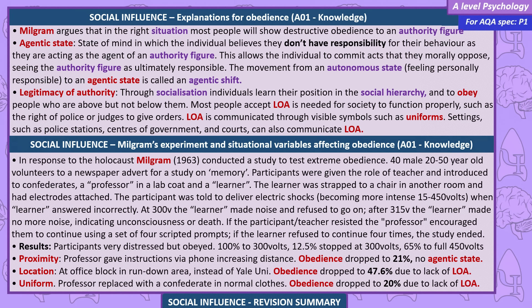In response to the Holocaust, Milgram, 1963, conducted a study to test extreme obedience. 40 male volunteers aged 20–50, recruited via a newspaper advert for a study on memory, were given the role of teacher and introduced to a professor in a lab coat and a confederate learner. The learner was strapped to a chair in another room with electrodes attached. The participant was told to deliver electric shocks of increasing intensity — 15 to 450 volts — when the learner answered incorrectly. At 300 volts, the learner made noise and refused to go on; after 315 volts, the learner made no more noise, indicating unconsciousness or death. If the participant resisted, the professor encouraged them to continue using a set of four scripted prompts. If the learner refused to continue four times, the study ended.